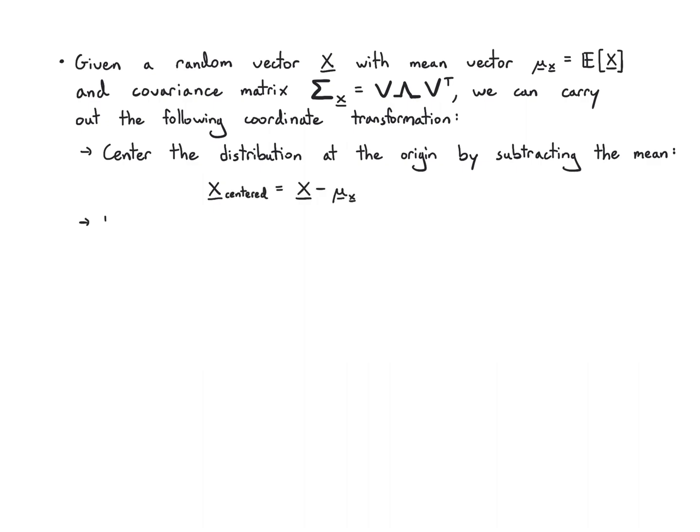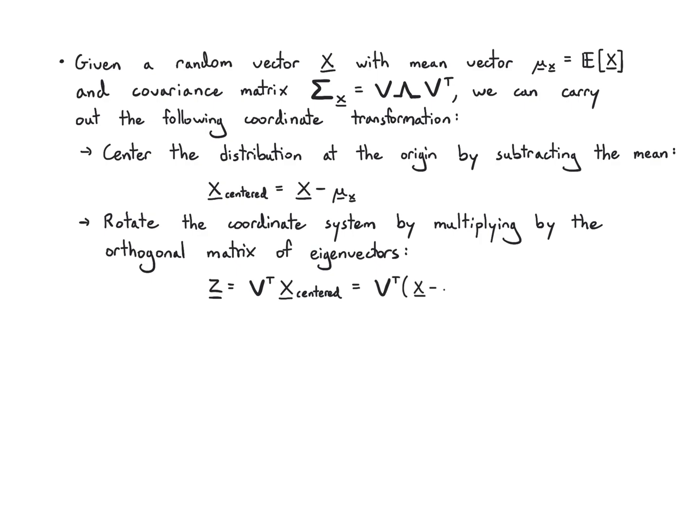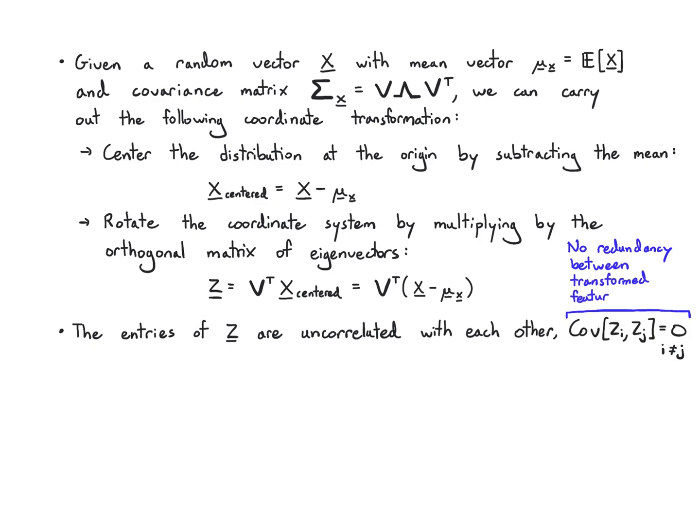Then we're going to rotate it by multiplying by this orthogonal matrix of eigenvectors. So we're going to write z as Vᵀ times the centered x, which is just x minus its mean. It ends up that the entries of z are uncorrelated with each other, so the covariance of zᵢ with zⱼ is zero whenever i is not equal to j, and the variances of these transformed features are now equal to the eigenvalues themselves.